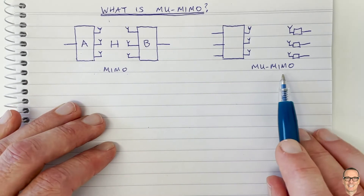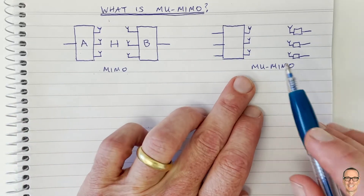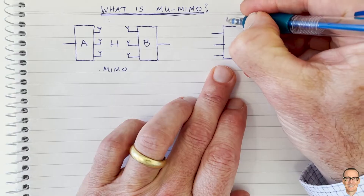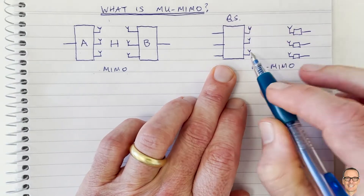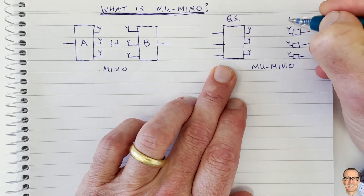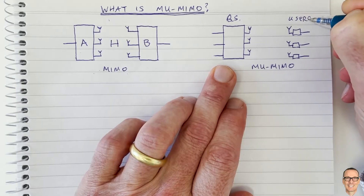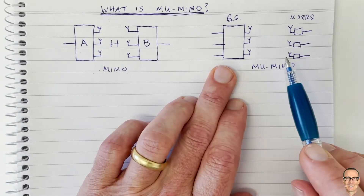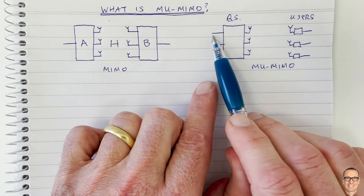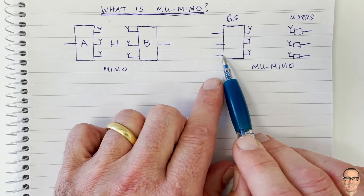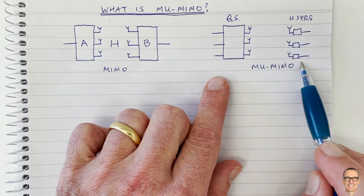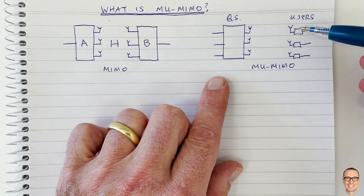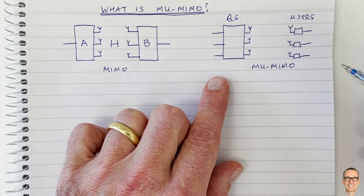So what's the difference with multi-user MIMO? In this case, we typically use this for a base station with multiple antennas where the users are all separated. You can see the similarities and the differences. We have three data streams going to three different users, and because the users are separated, we can't do joint processing at the users.